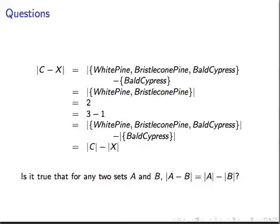Finally, what about this one? Conifers minus cypresses gives us the two pine species in our discussion. That's the same number we'd get if we subtracted the cardinality of cypresses from the cardinality of the conifer set. Is that true always? That the cardinality of the difference is, for all finite sets, equal to the difference of the cardinalities?